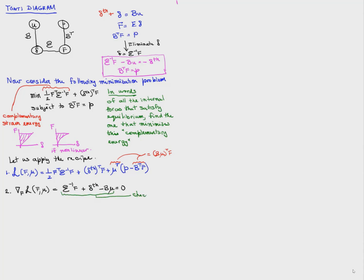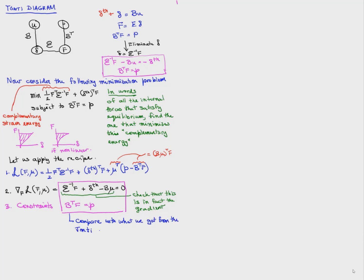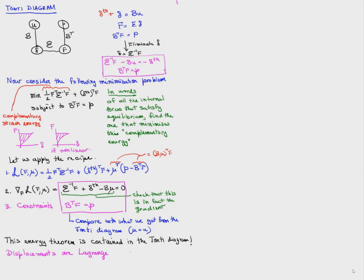We write the gradient of the Lagrangian with respect to F equal to zero, which gives us E inverse F plus delta thermal minus B mu equals zero. We see that these two equations are identical to what we got from the Tonti diagram, with u being replaced by the Lagrange multiplier mu. So the principle of complementary energy is actually contained in the Tonti diagram, and displacements are nothing but Lagrange multipliers for the equilibrium constraints.